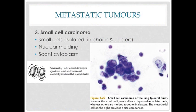Next metastatic tumor is small cell carcinoma. They appear small and can be isolated, in chains, and in clusters. Nuclear molding is another unique characteristic of small cell carcinoma, with scant cytoplasm. The right image is the metastatic lung small cell carcinoma in pleural fluid — small size of cells, some isolated and some in clusters, with nuclear molding, are shown in the image.